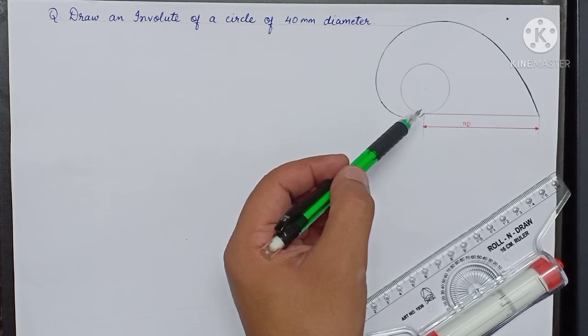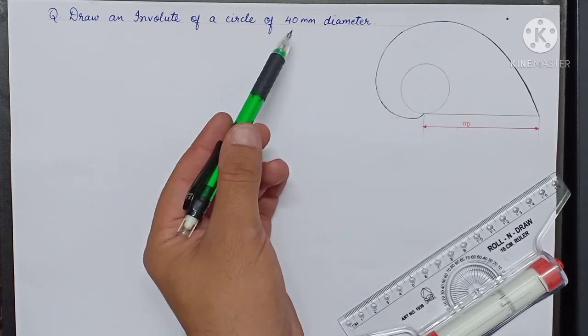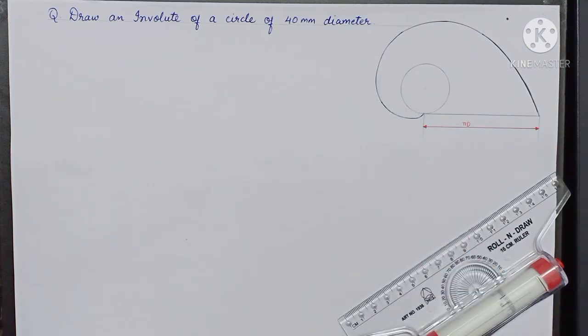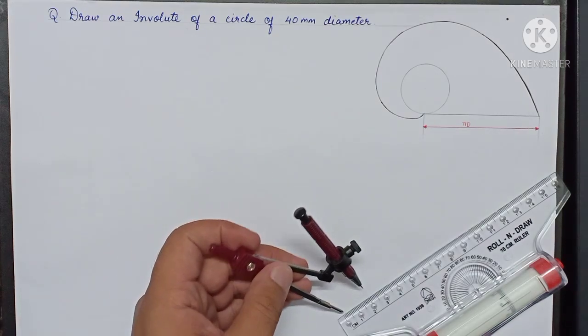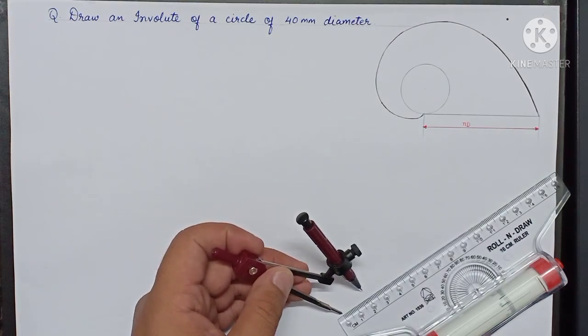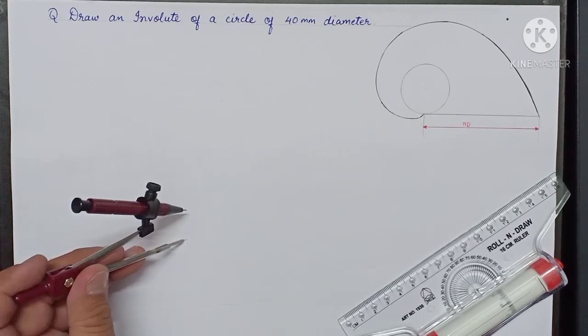Let us start by drawing the circle of diameter 40 millimeter. We take a radius of 20 millimeter and draw a circle.